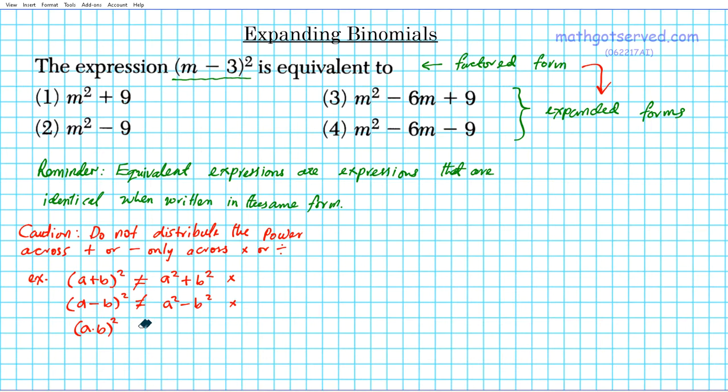The product property of exponents, the power of a product property. This one you can distribute to a squared, b squared. This is good. And then if you have a quotient also, you can distribute the power across the numerator and the denominator. So the big mistake that most students make is they extend the idea for these two to sums and differences and they get the problem wrong.